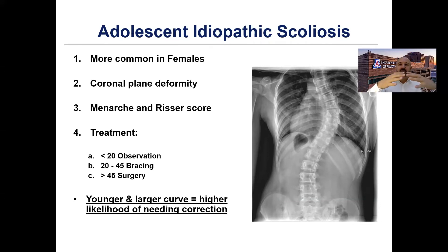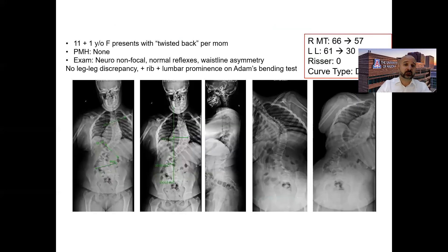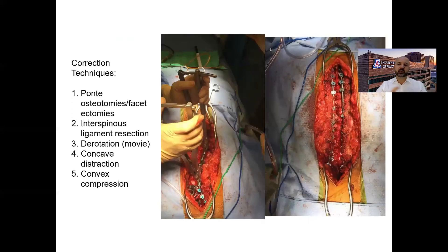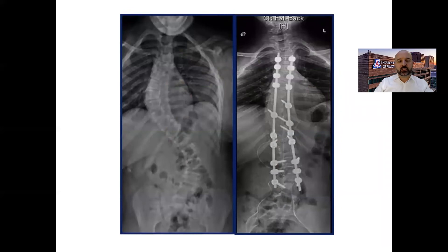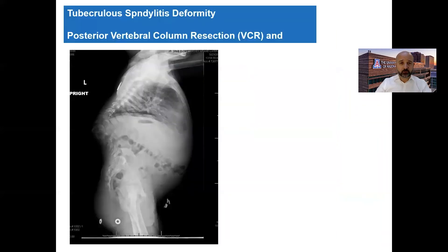We see adult scoliosis, and some of us see pediatric or adolescent scoliosis. These X-rays illustrate different pathologies. These tend to be bigger operations with multiple screws and rods and correction maneuvers to straighten out the spine — whether in adults or in children — so these are deformity surgeries.